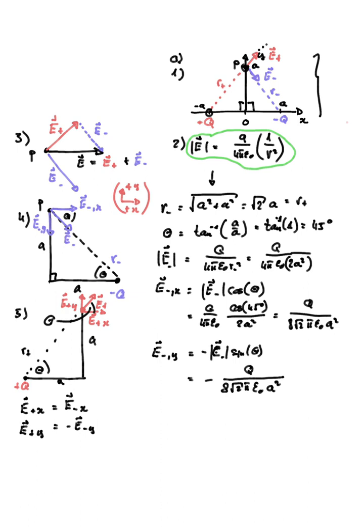For part three, we're asked for the direction of the resultant electric field. Because the geometry is symmetric, both E+ and E- make the same angle θ with the x-axis, and they have the same magnitude. This means their y-components cancel. By vector addition, the resultant direction is along the x-hat direction, simply because the y-components cancel since both charges are equidistant from point P.